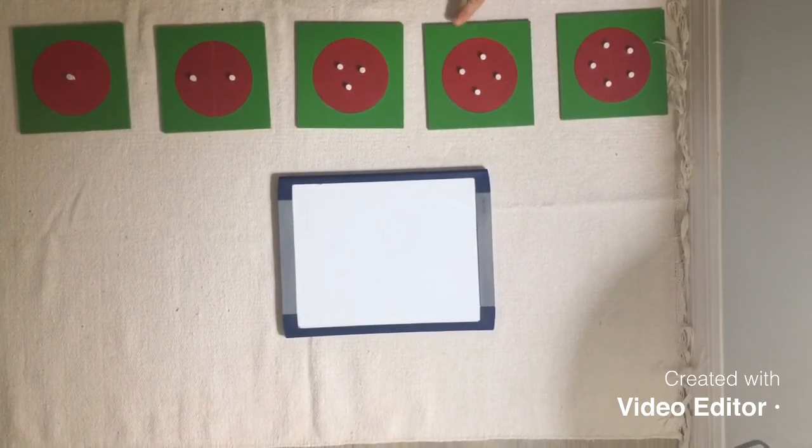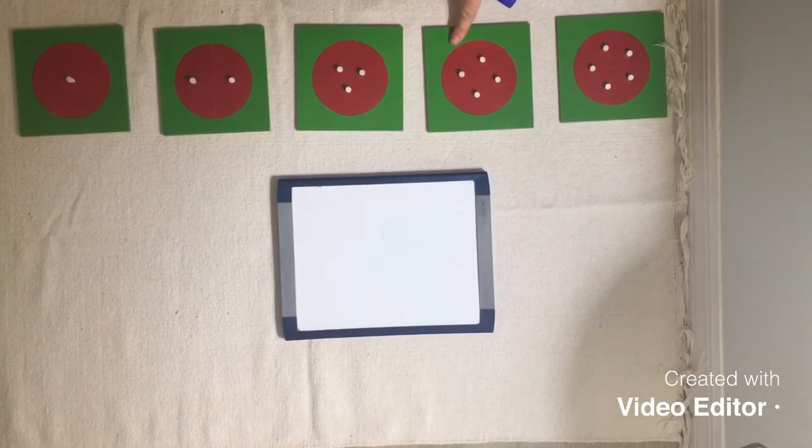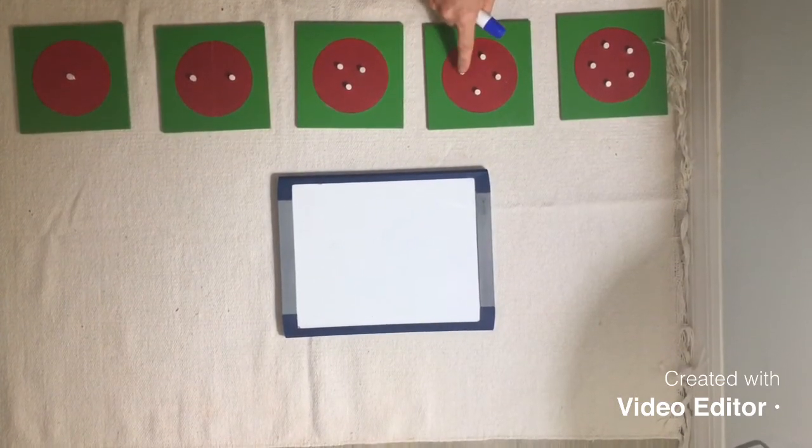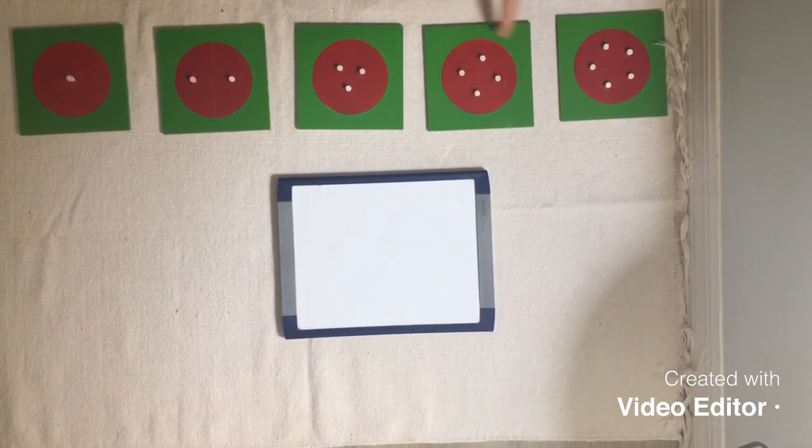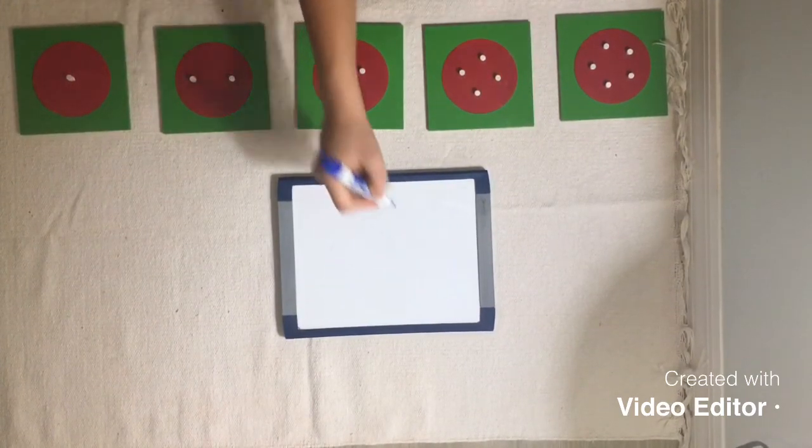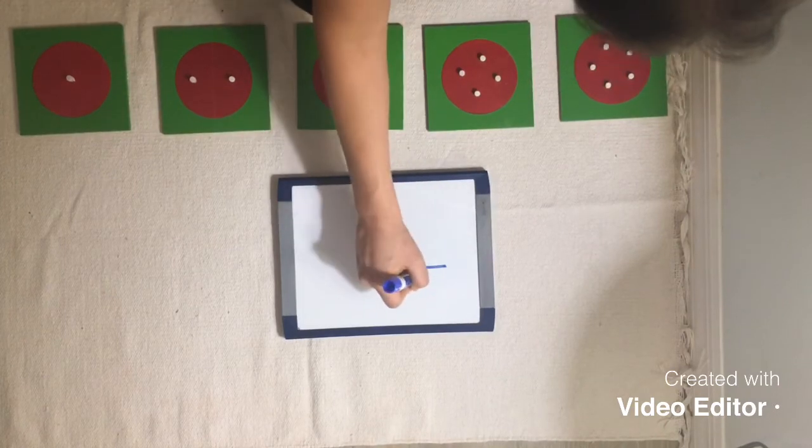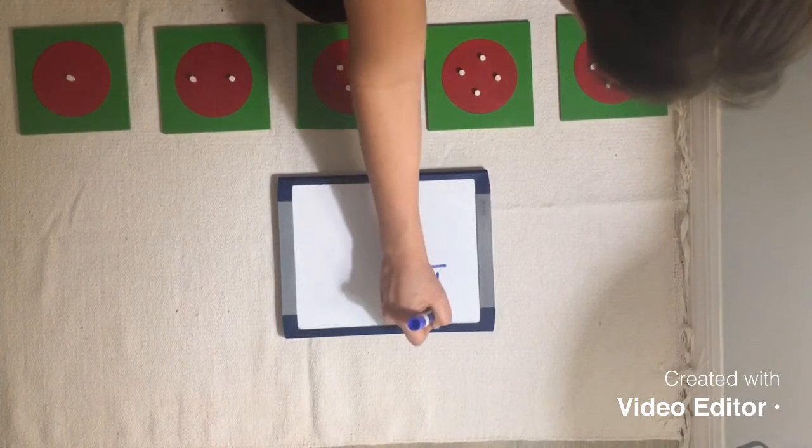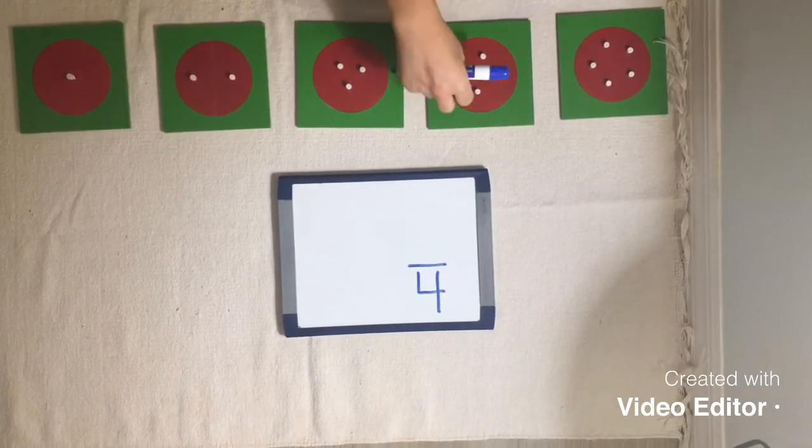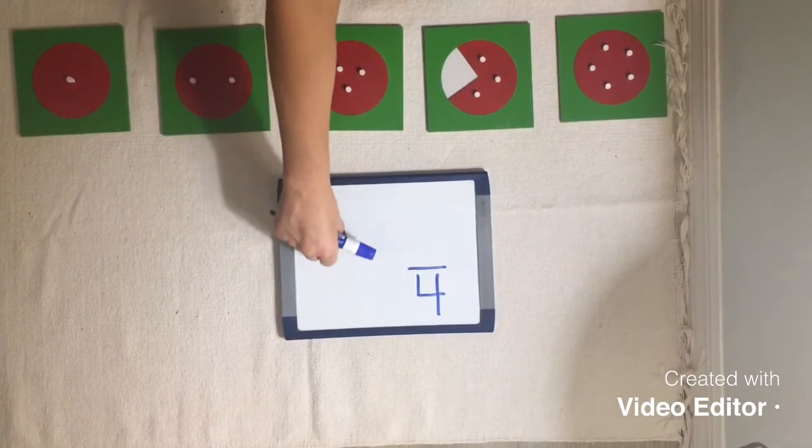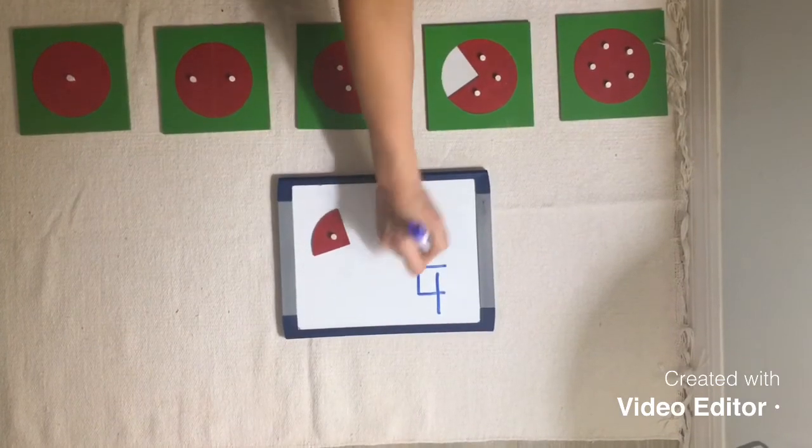How many equal parts has our next fraction circle been divided into? Let's count. One, two, three, four. Four. Four equal parts. So automatically, we know that our denominator will be four. When you have a fraction divided into four equal parts, each of those parts is called one fourth.